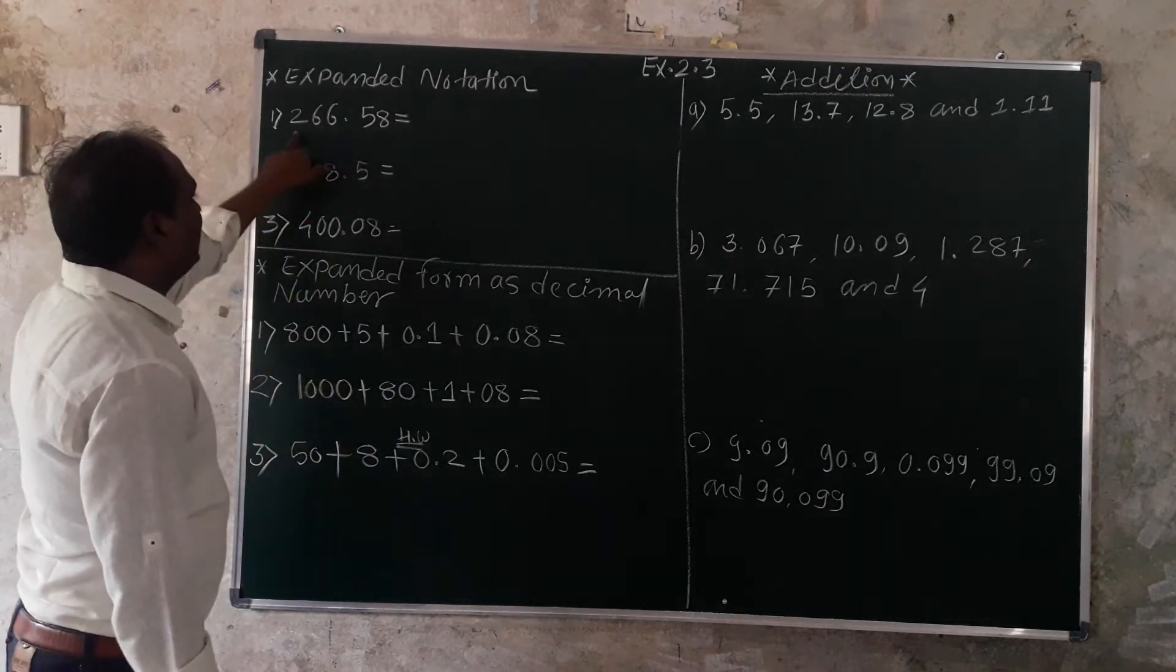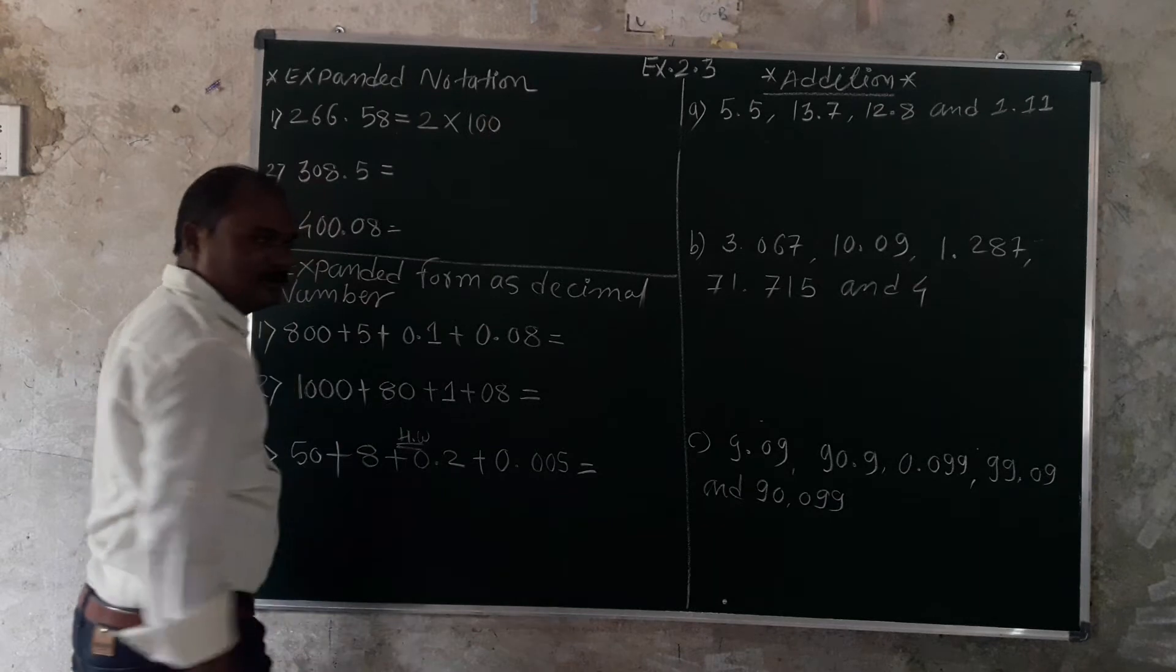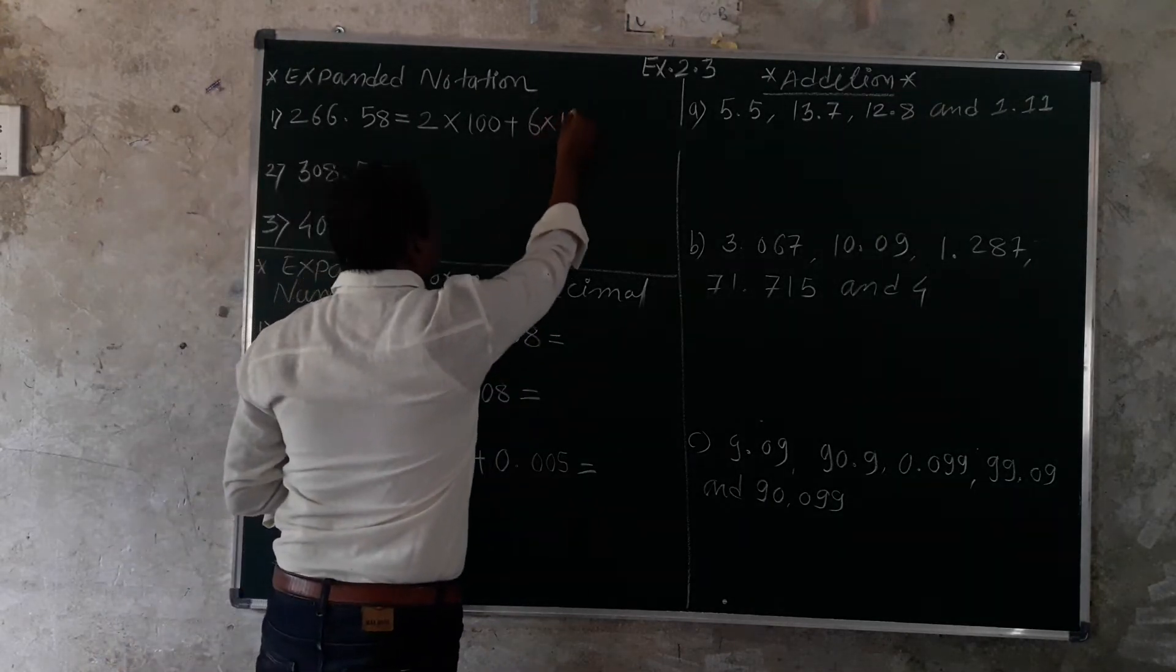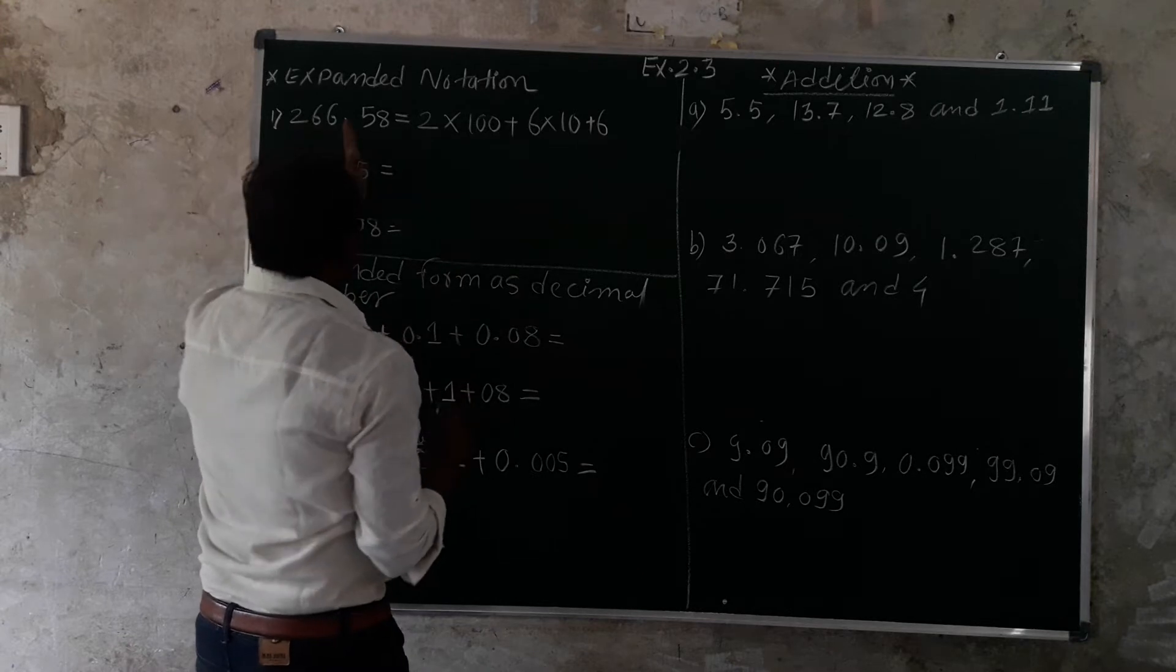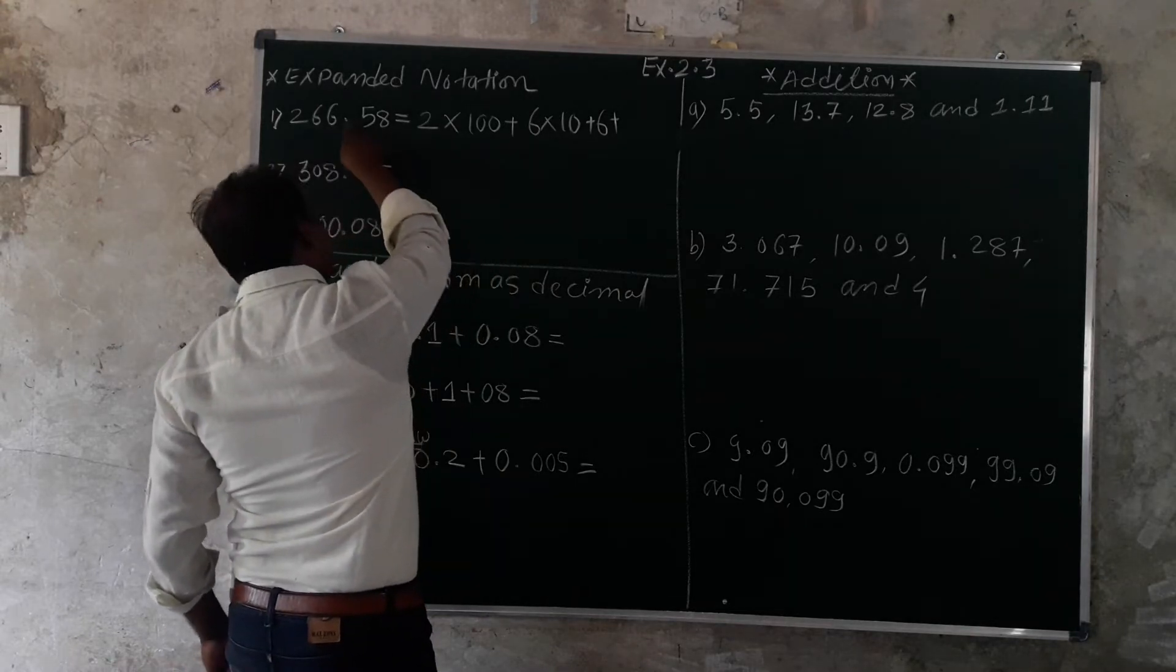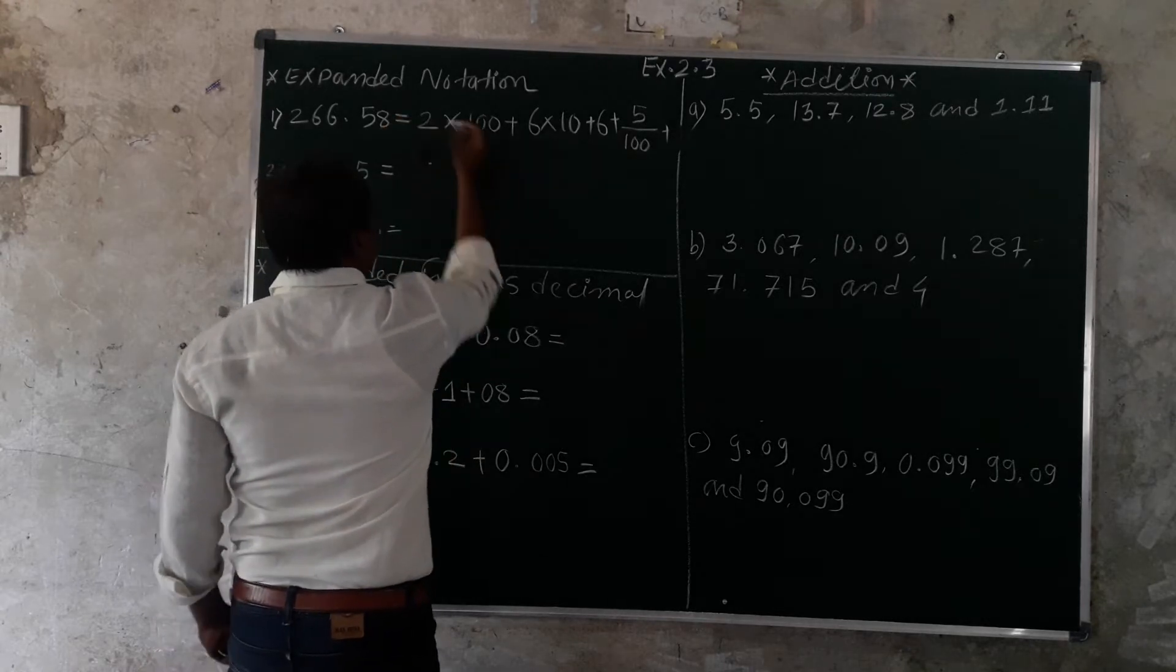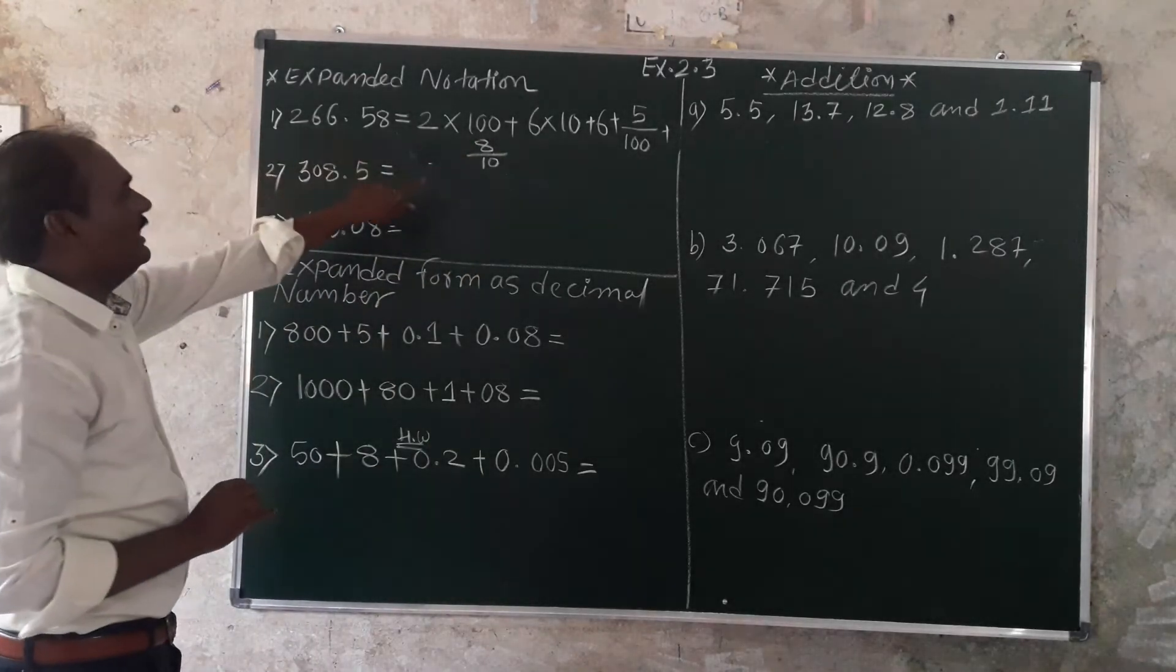So how to do it? 266.58. This is 2 times 100 plus 6 times 10 plus 6 times 1 equals 266. The whole number, then decimal point 58. This has 2 decimal places. 5 over 100 plus 8 over 10. This is the expanded notation of this decimal number.